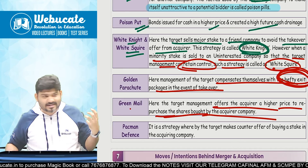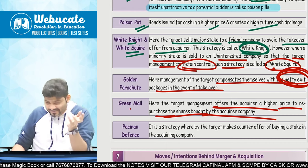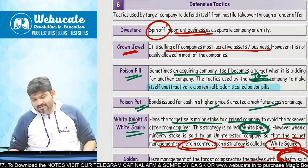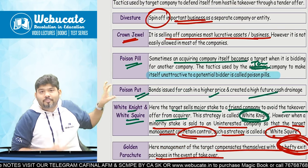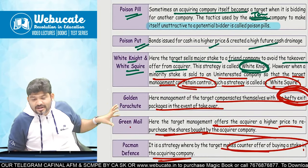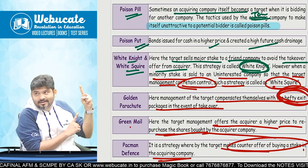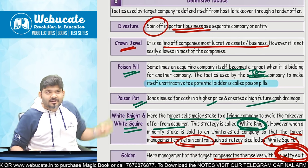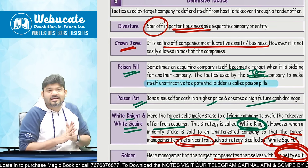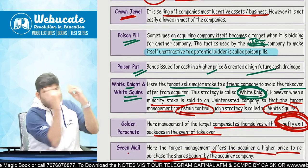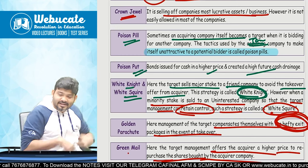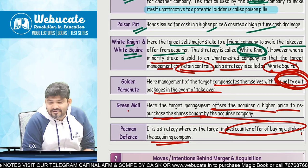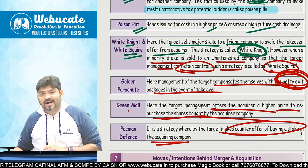Then there is Pac-Man defense — the acquirer company is coming to acquire the target, but the target makes a counter offer: 'I want to acquire you.' This is what Tata Steel did with Corus Steel. It is a strategy whereby the target makes a counter offer to buy a stake in the acquiring company. Summary of defensive tactics: divestiture (sell off a part), crown jewel (sell major assets), poison pill (make yourself unattractive), poison put (issue convertible debenture), white knight (sell to a friend), white square (sell and repurchase), golden parachute (hefty exit offer), greenmail, and pac-man defense.